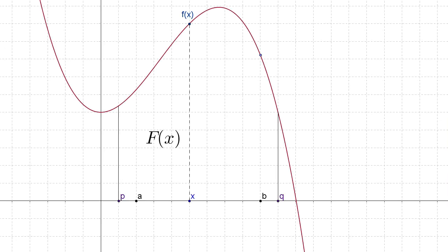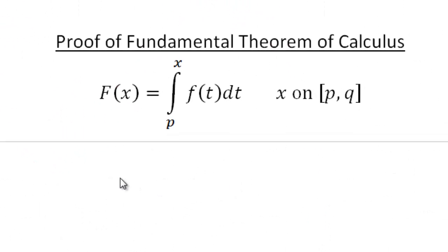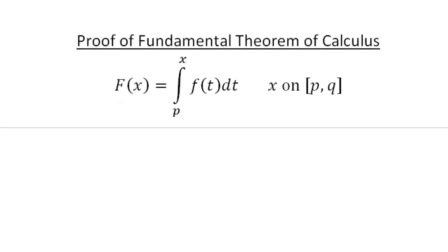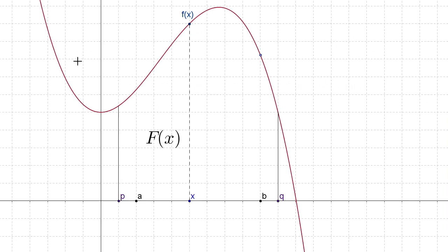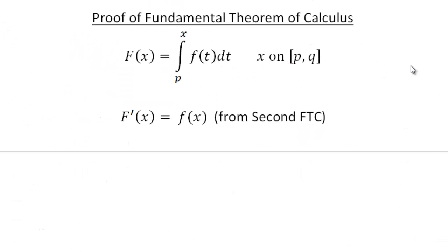Now let's use that to prove the first fundamental theorem of calculus. Consider a new interval from p to q, with x somewhere along that closed interval. We let capital F of x be the area that accumulates between p and x of f of t dt. From the second fundamental theorem of calculus, we know the derivative of capital F of x — that accumulation function — is going to be f of x, because we just proved that.